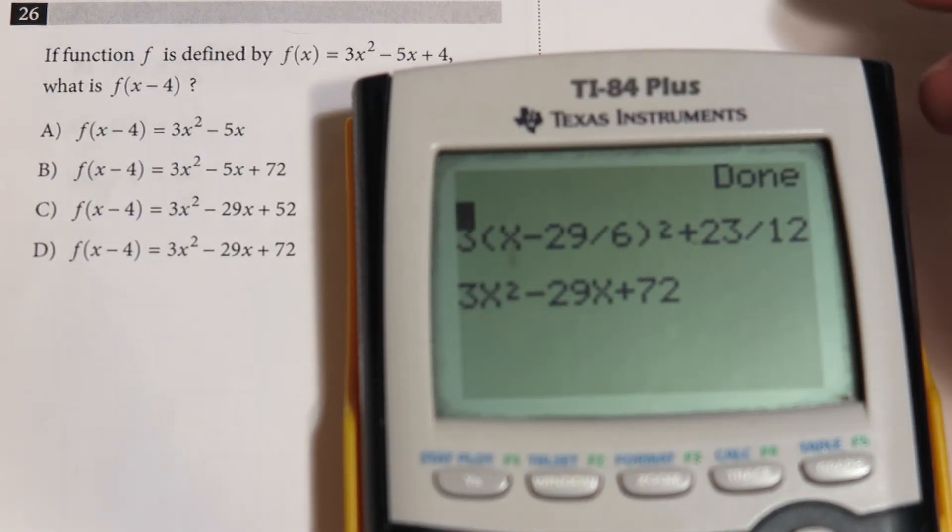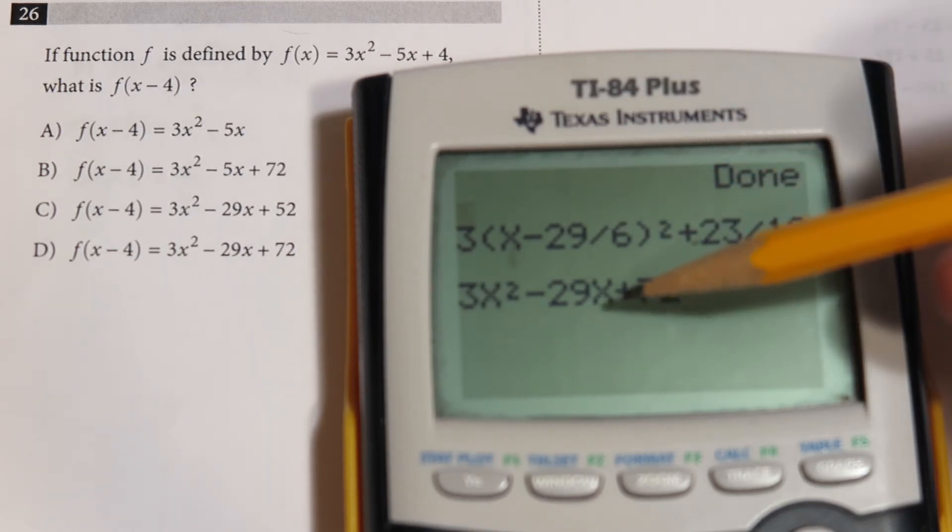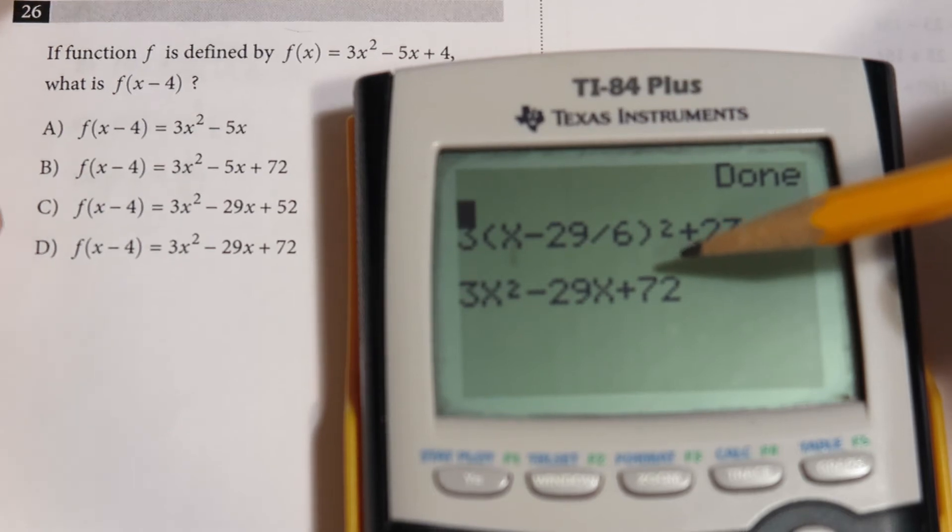If you take the shifted one, which would be 29/6, the standard form is going to be 3x² - 29x + 72, which would be choice D here.